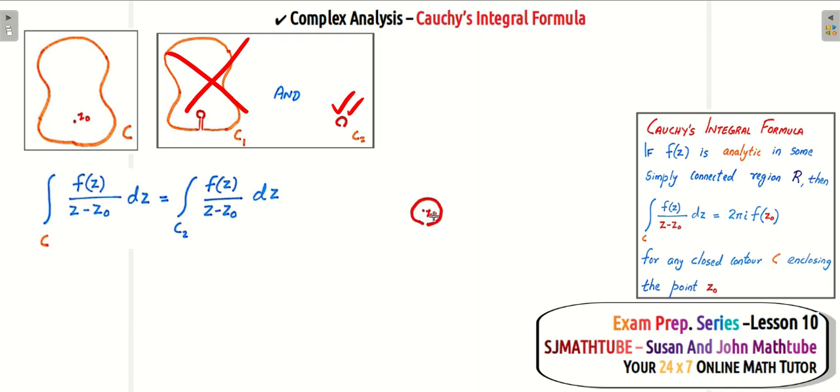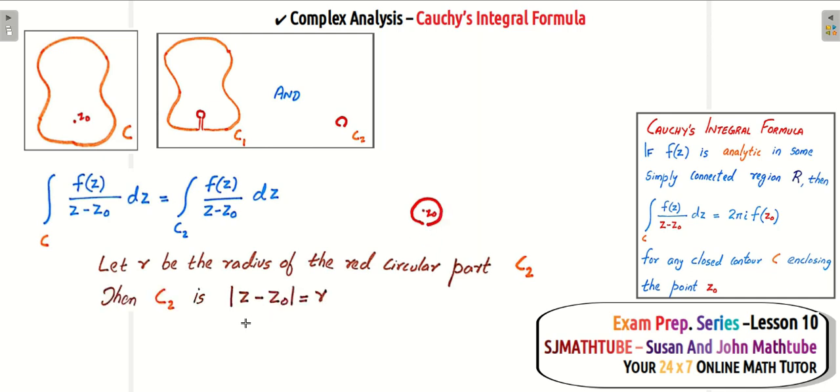And I hope you are able to see z naught. And let R be the radius of this circle. R is so small, so small. I told you I magnified infinite number of times. And the equation of the circle is mod(z minus z naught) equal to R. In the previous videos I explained what is modulus. And z minus z naught means the distance between z and z naught.